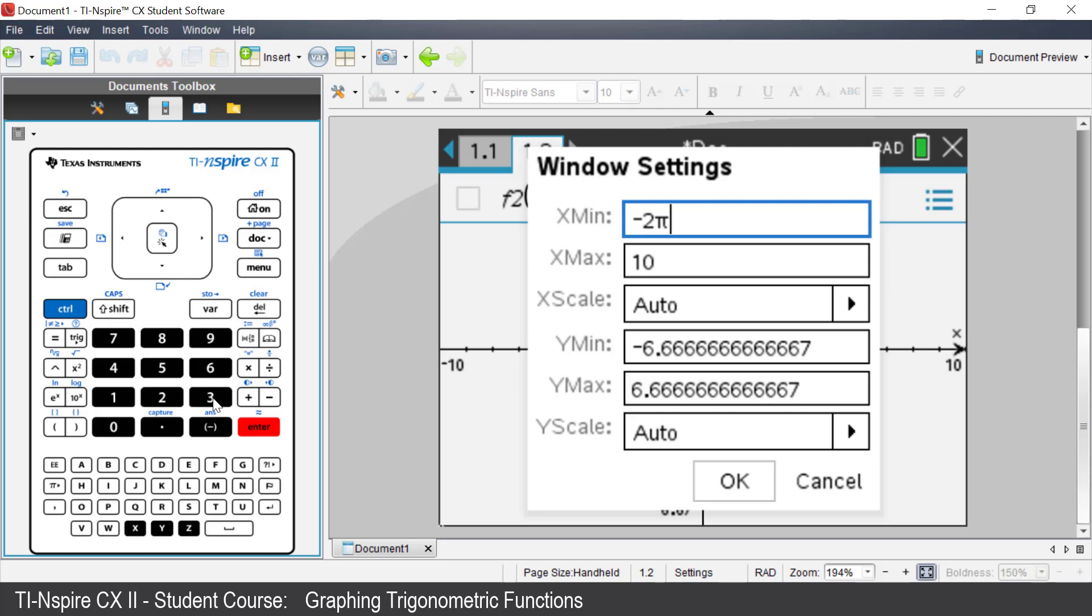Negative 2π to 2π with a scale of π over 2, and the y-axis negative 4 to 4 with a scale of 1.